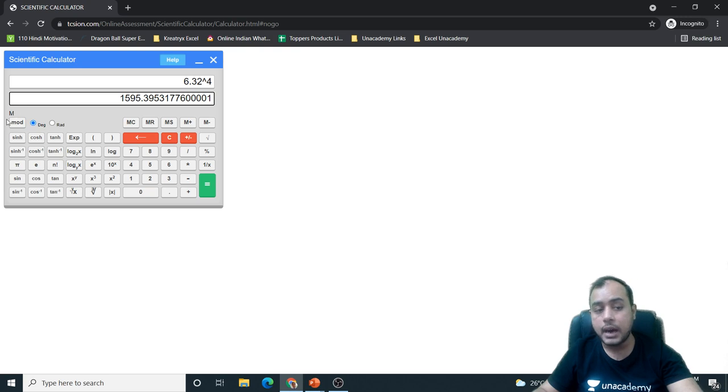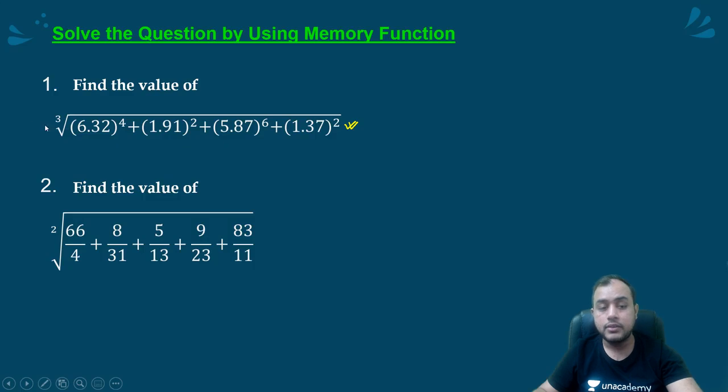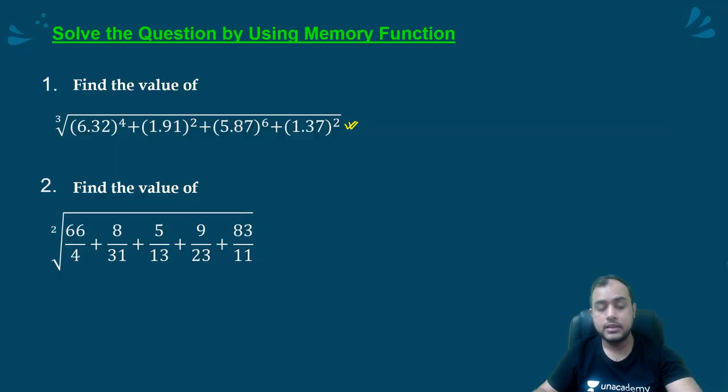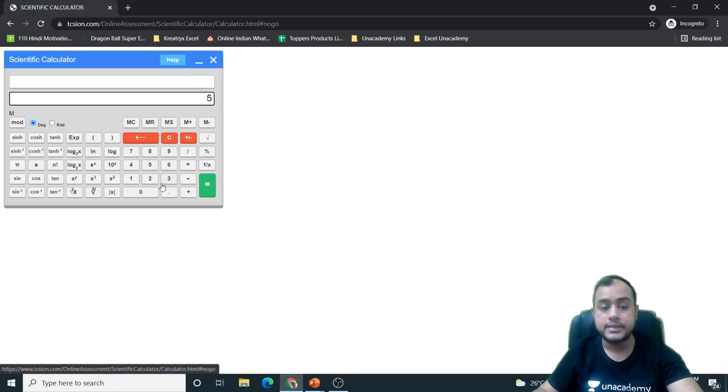See, an M appears on the top of mod, which means there is certain data in the memory. What is the next number? 1.91 square. I will clear it. Don't press MC, memory will be cleared. Only C. 1.91 square. I will add it to the data stored in the memory by pressing M plus. Next number, 5.87 to the power 6. 5.87 X to the power Y 6. I will add it to the data in the memory, M plus.